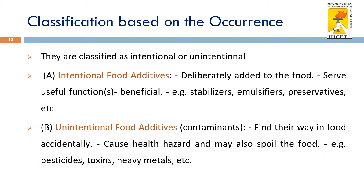Unintentional additives are those which accidentally find their way into the food and may cause health hazards and also spoil the food. Examples of unintentional food additives include pesticides, toxins, and heavy metals.